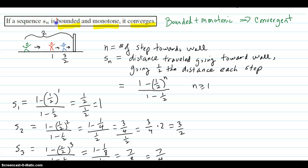It has to be both of those. If it is both of those, bounded and monotonic or monotone, then it will converge.